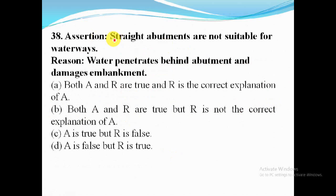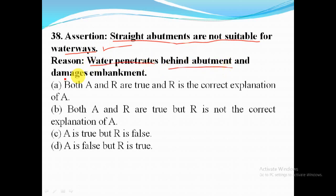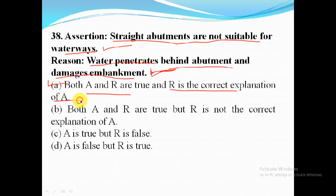Assertion A: straight abutments are not suitable for waterways — correct. Reason R: water penetrates behind abutments and damages embankments — this is also a correct statement and the correct reason. So option A — both A and R are true and R is the correct explanation of A — is the answer.